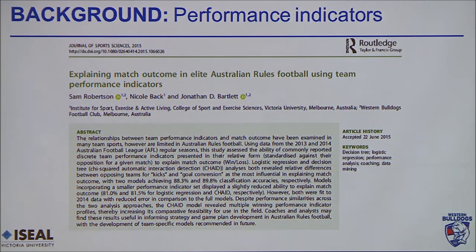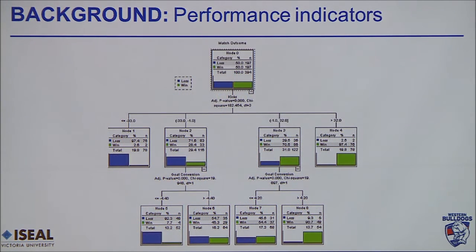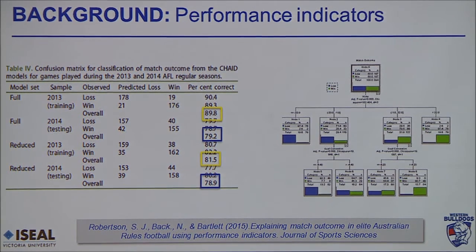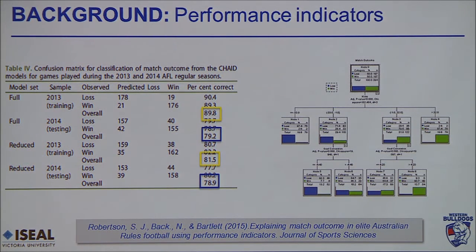Considering how much sports science research is done in Australian rules football, there's actually not been that much on this topic. This paper came out earlier this year in the Journal of Sports Science, where we looked at how we could explain match outcome as a binary win-loss situation. We used logistic regression and a decision tree approach, and basically two of those performance indicators — kicks and goal conversion — were the two most important things to have more of than the opposition. We were able to classify a winning or losing outcome with around 80 to 90% accuracy on our training set, and about 79–80% for our testing set.